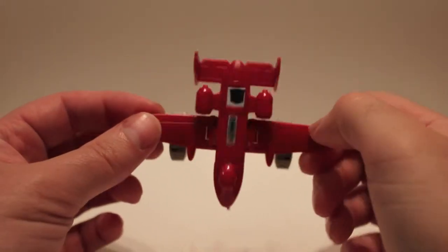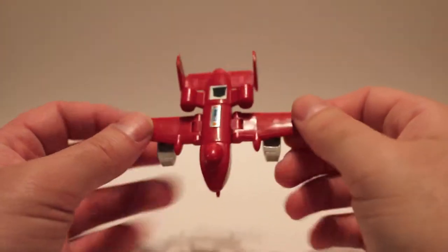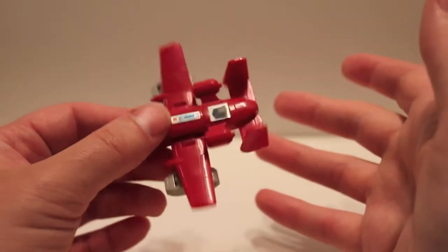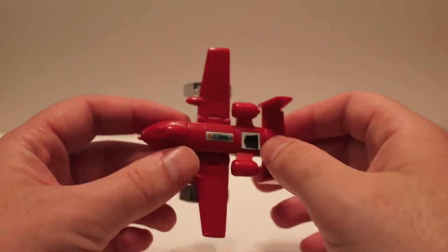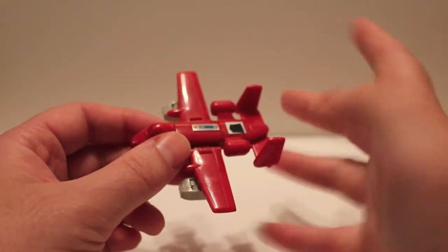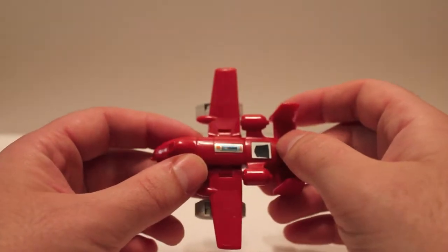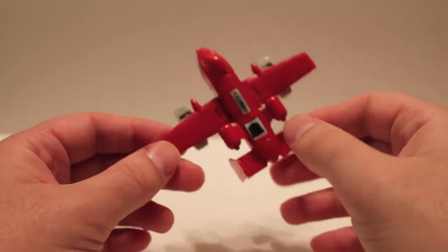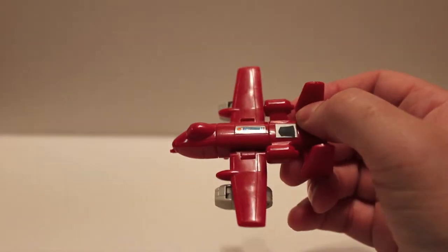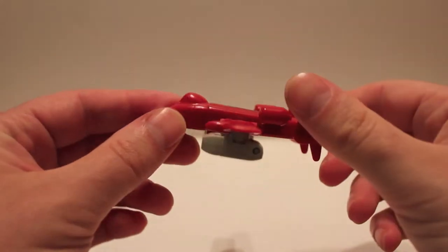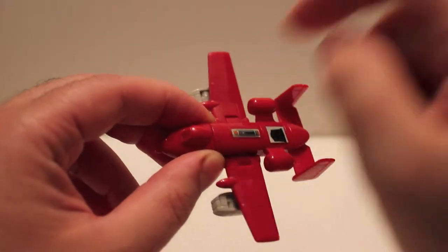This was the very first flying transformer on the Autobot side. The Decepticons obviously always had the Seekers, and for some reason the Decepticons could fly by themselves and the Autobots couldn't - except in the first episode, the first mini series. The Autobots could fly too, which was weird. But after that, the Decepticons could fly whenever they wanted just by holding out their fists, which made no sense to me whatsoever. This guy was the first Autobot capable of flight.